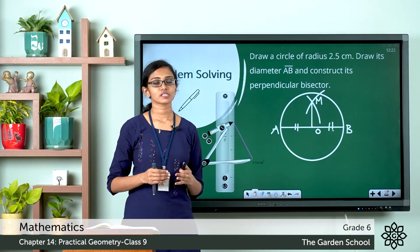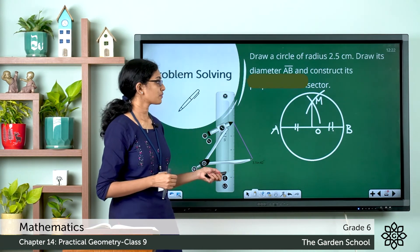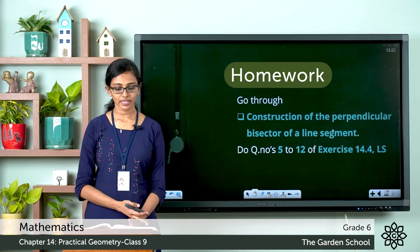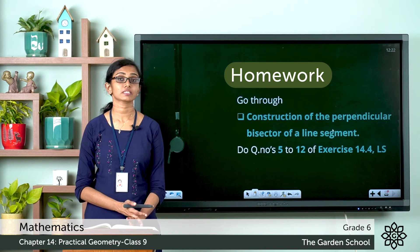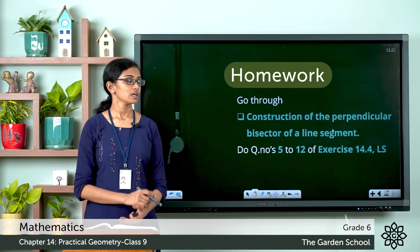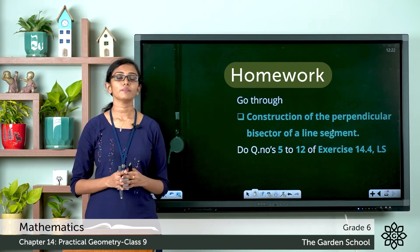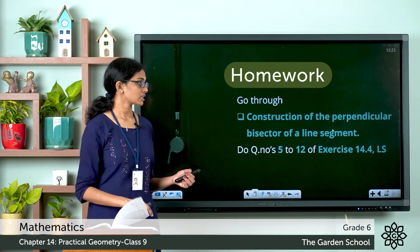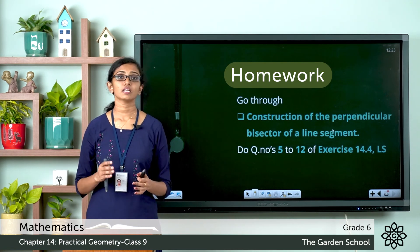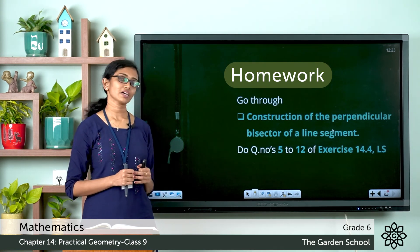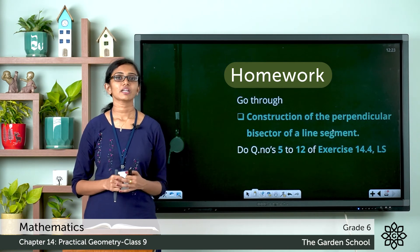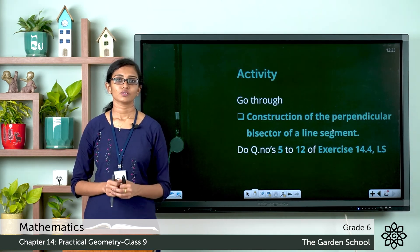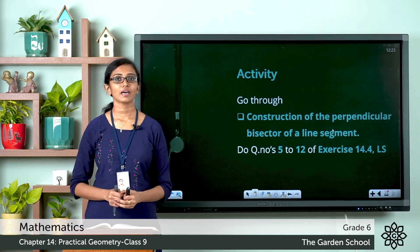I hope this is clear to you — that's all for today. Go through this topic once again; it is on page number 211 under the heading 'Construction of the Perpendicular Bisector of a Line Segment.' Then you will be ready to work out questions number 5 to 12 of exercise 14.4. There is also another question under the life skills section — please go through that as well. Once you are done with all the answers, take a picture and send it through Teams. See you all in the next class with a new topic — bye!